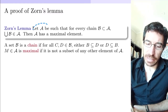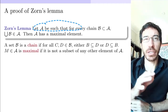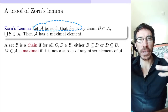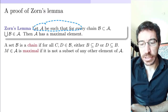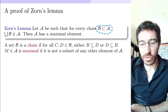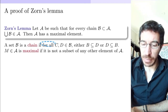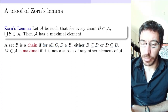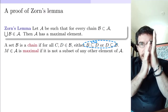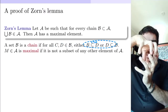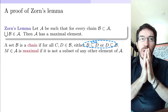Zorn's Lemma says that if you have a collection of sets A — a bunch of sets — with the property that whenever you take a subset of this collection which happens to be a chain, a chain meaning that every two elements in the chain are comparable, like one is included in the other, so every two sets in the chain are either one inside the other or the other inside the one, but they are not incomparable.